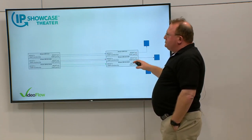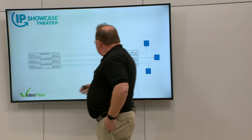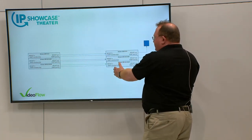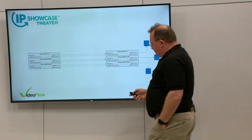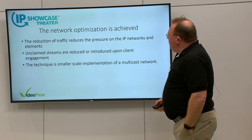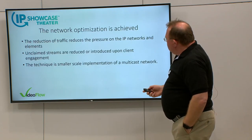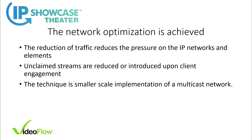Let's grow the network. This could be a cloud device. This is what we had in the previous slide, and this is the same connection to the cloud or to a central element. Network optimization is achieved. The reduction of traffic reduces the pressure on the IP network. Unclaimed streams are now reduced from the network and are introduced only upon client engagement. This technique is a small-scale implementation of a multicast network.